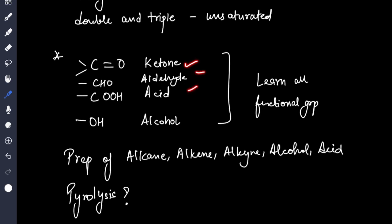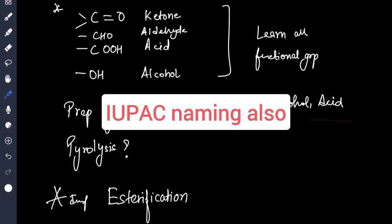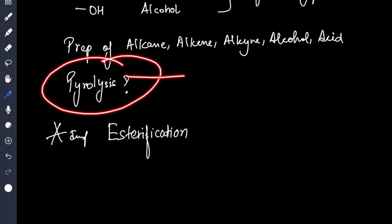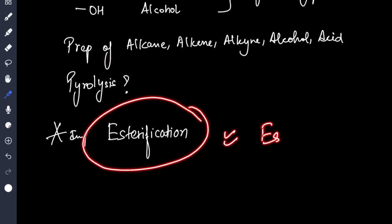Then all these functional groups like ketone, aldehyde, acid, alcohol, the difference between them. Preparation of all these: alkane, alkene, alkyne, alcohol, acid. What is pyrolysis, what is this, then esterification very important. Ester is formed by which two compounds, comment this.